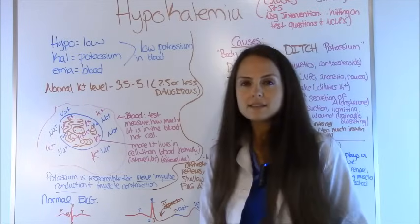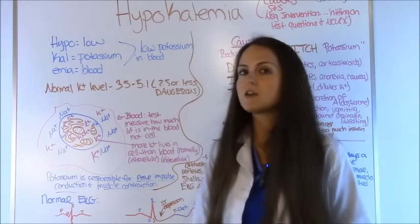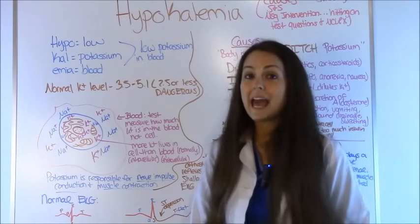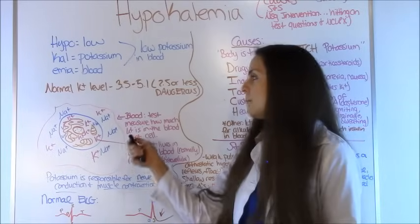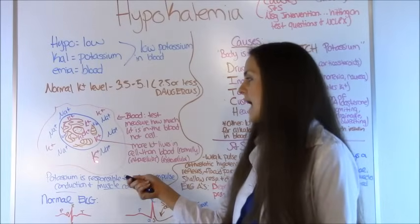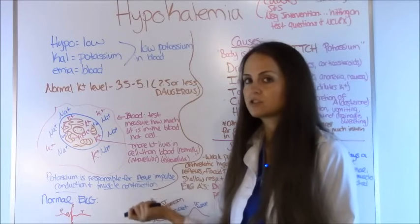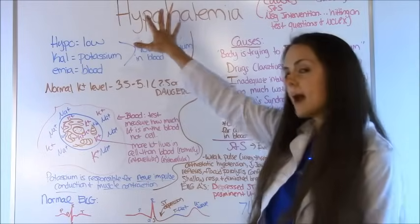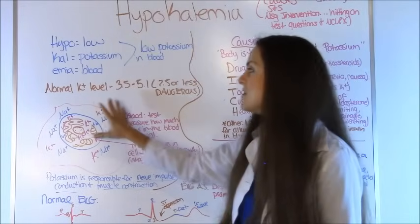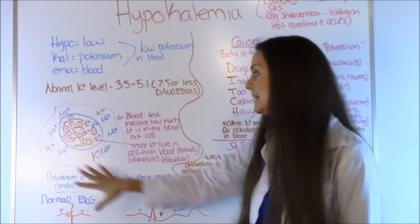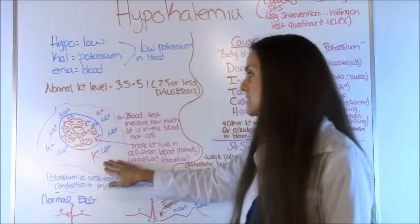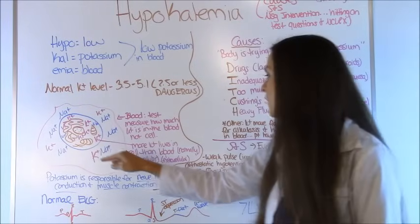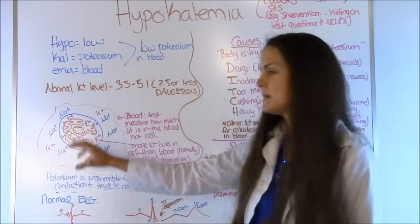Whenever a blood test is ordered for a patient — because a lot of times in the hospital you're going to draw electrolytes on a patient, or maybe just specifically a potassium level — the blood test is just looking at the potassium in the blood, in the extracellular part. It's not looking in the intracellular. So what's happened in hypokalemia is that there is hardly any potassium left in the blood; it's all probably shifted into the intracellular. So whenever that happens, you get some issues.